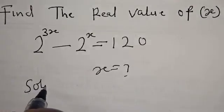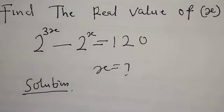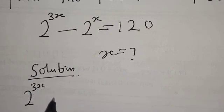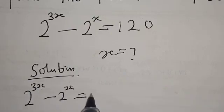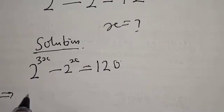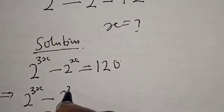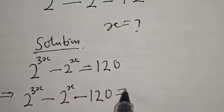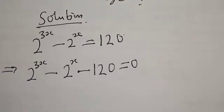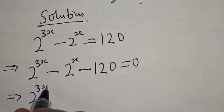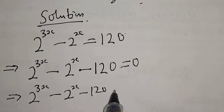Solution. We have 2 raised to power 3X minus 2 raised to power X is equal to 120. This implies that we have 2 raised to power 3X minus 2 raised to power X minus 120 is equal to 0.